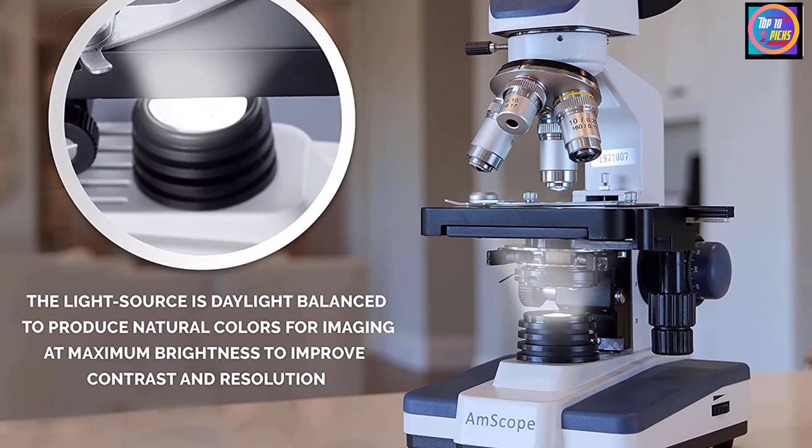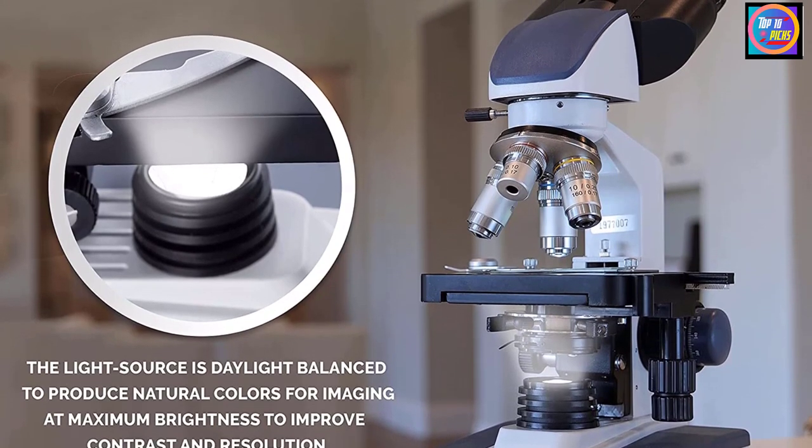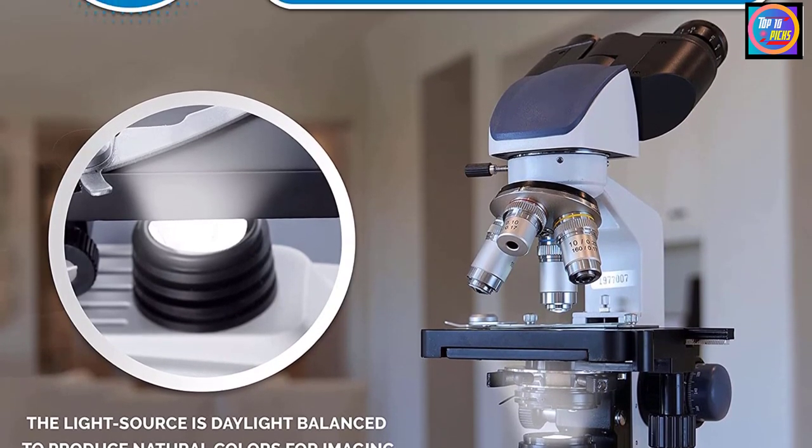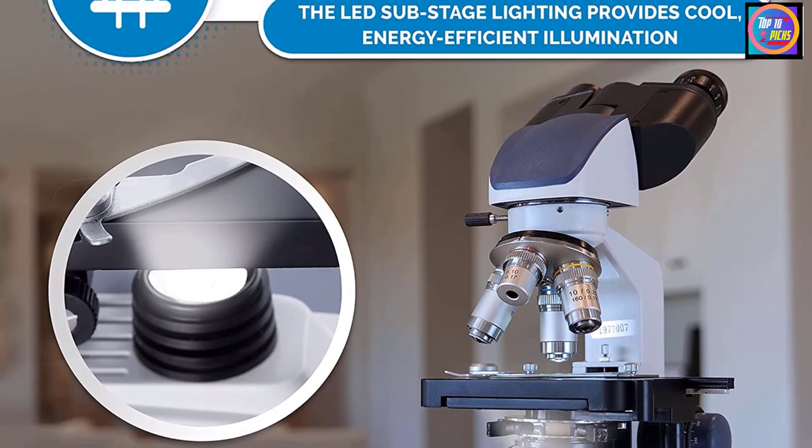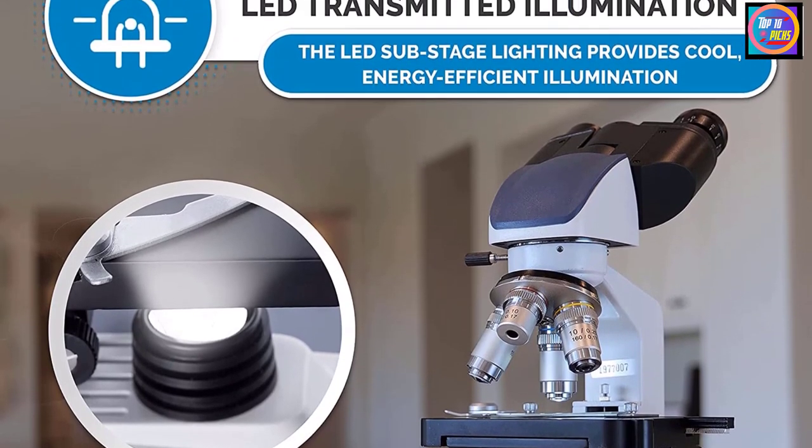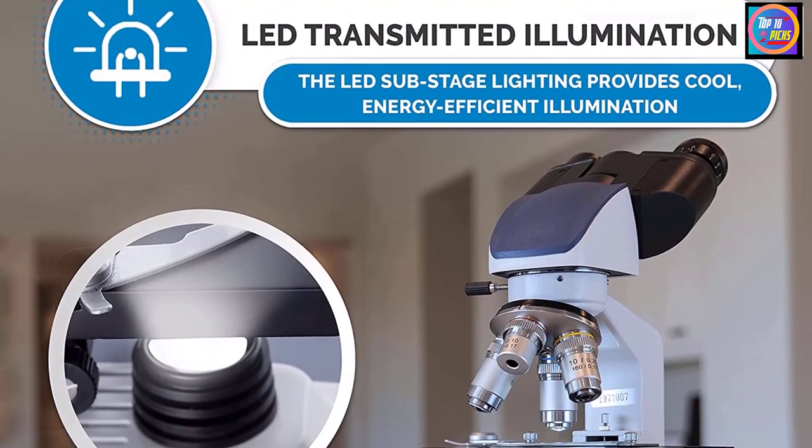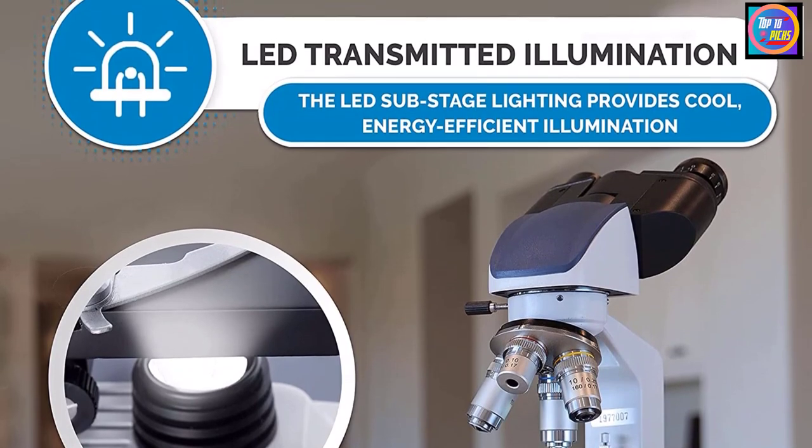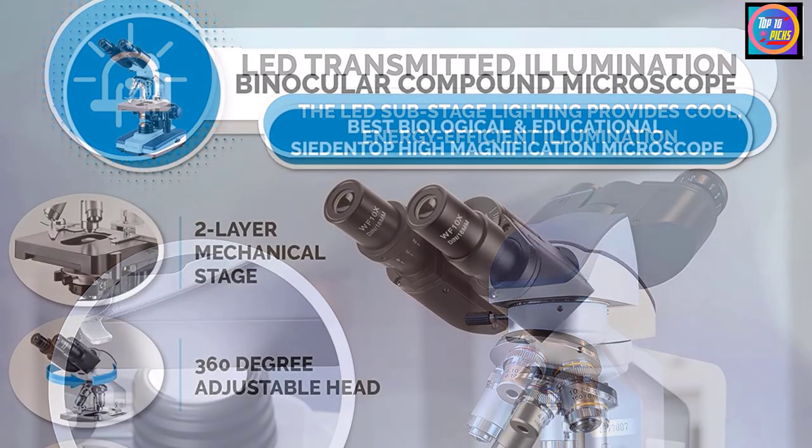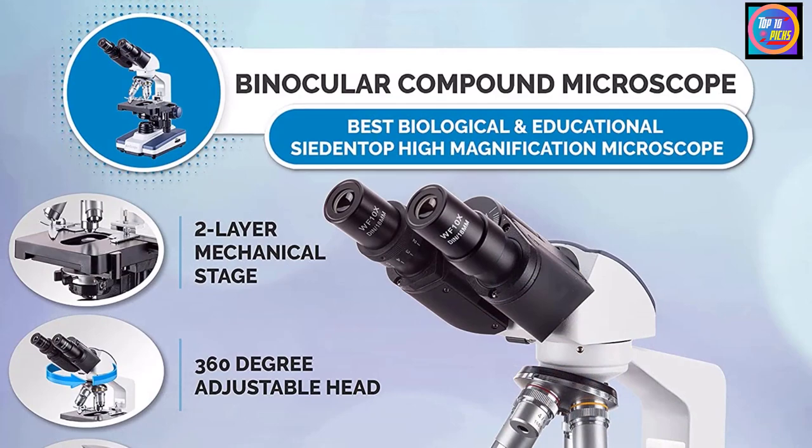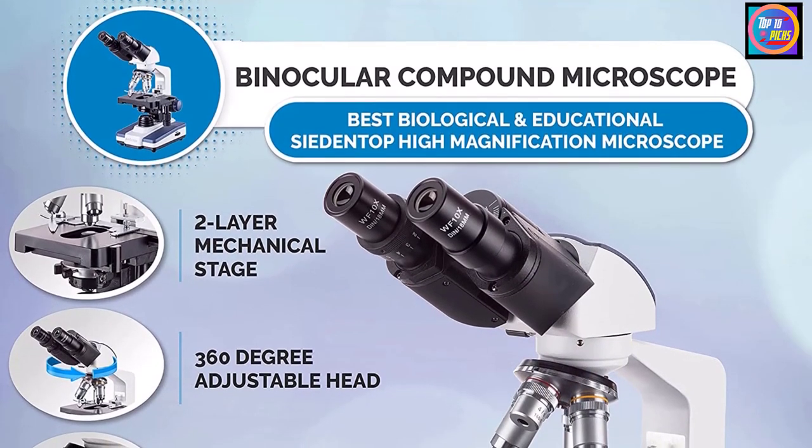The Ampscope B120C compound binocular microscope has pairs of 10x wide field and 25x wide field eyepieces, a forward-facing nose piece with 4 DIN achromatic objectives, bright field LED illumination, a 1.25 NA Abbe condenser, and a double-layer mechanical stage.